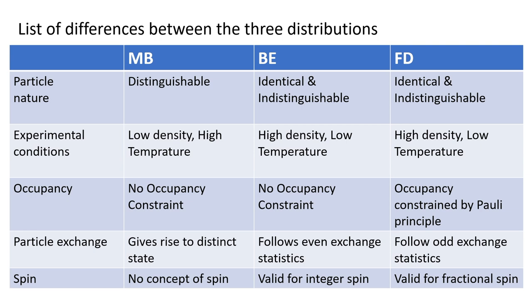With regard to spin: classical particles have no concept of spin, which is a purely quantum mechanical quantity. Bose-Einstein statistics is valid for integer spin particles, while Fermi-Dirac statistics applies to half-integer or fractional spin particles.